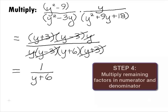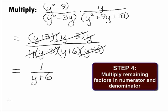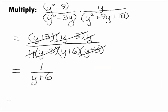In Step 4, we want to multiply any remaining factors that we have in the numerator and the denominator. It looks like there is nothing to multiply here, so our final answer is 1 over y plus 6.